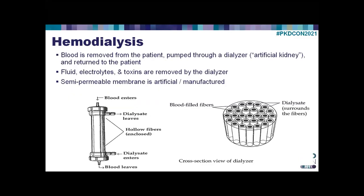With hemodialysis, blood is removed from the patient, pumped through a dialyzer—an artificial kidney—and then returned to the patient. Fluid, electrolytes, and toxins are removed by the dialyzer. The semipermeable membrane is artificial and manufactured. This is a picture of a typical dialyzer. The blood goes through the center and the dialysate goes in an opposite direction. If you cut this dialyzer in cross-section, there are thousands of little hollow fibers. Inside the hollow fibers, blood runs. Outside the hollow fibers, dialysate surrounds them, and it's these hollow fibers that have the semipermeable membrane so that waste products and fluid move from the blood into the dialysis space and are discarded.